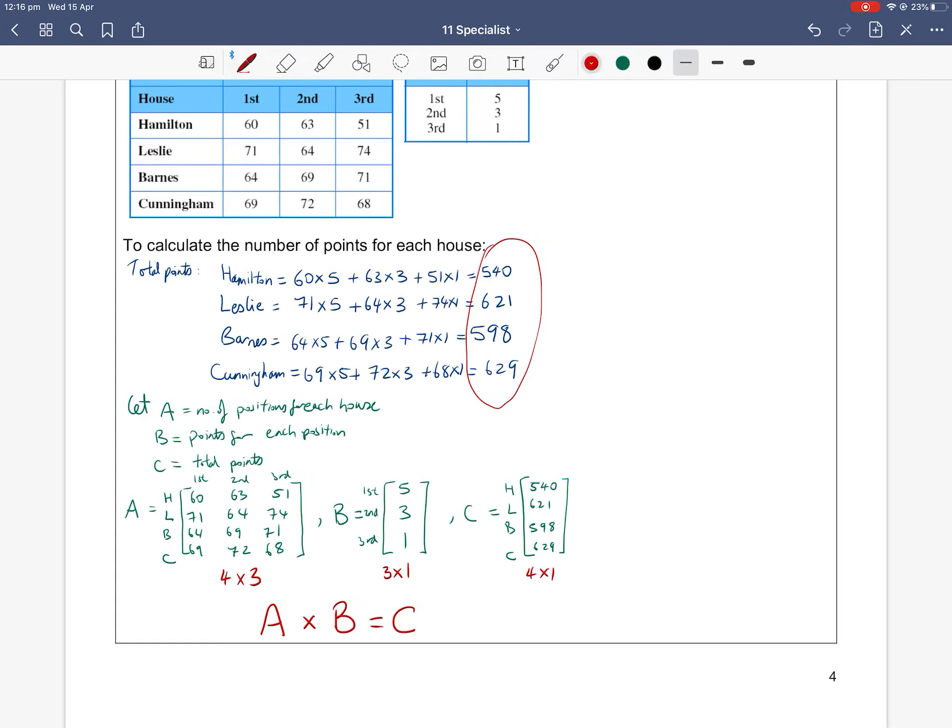So one thing to note is how the dimensions match up. A is a four by three, B is a three by one, C is a four by one. So what that means is, see how the inside dimensions match up? The three and the three match up. To multiply matrices, your inside column and row dimension must match up.